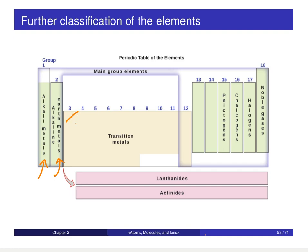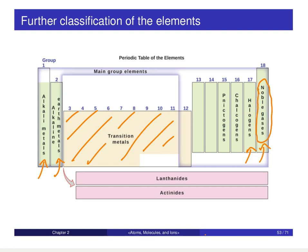The whole region in the middle of the periodic table — that block separating the taller columns on either side — we call those the transition metals. Over on the right end, I want you to focus on the last two columns: column 17 is the halogens, and column 18 is the noble gases. So these five groups — alkali metals, alkaline earth metals, transition metals, halogens, and noble gases — are all names you should have memorized.